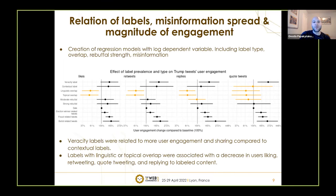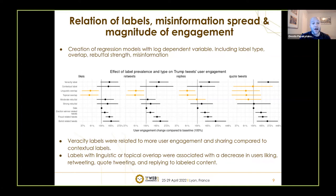We created regression models with log-dependent variables of likes, retweets, replies, and quote tweets, and as independent variables: whether a veracity or contextual label was present, the overlap of the label with the tweet, the rebuttal strength of the label, the date of the tweet, and whether the tweet contained misinformation and of what type. We found that veracity labels were related to more user engagement and sharing compared to contextual labels, but labels with linguistic or topical overlap were associated with a decrease in users liking, retweeting, quote tweeting, and replying. In all cases, misinformation was the most robust factor driving engagement.